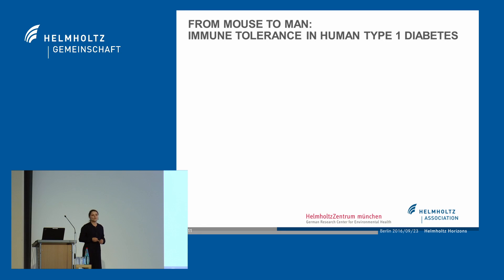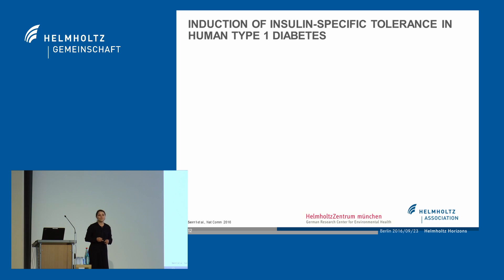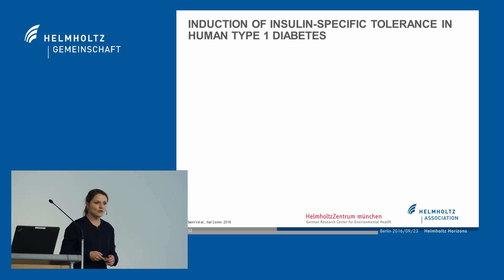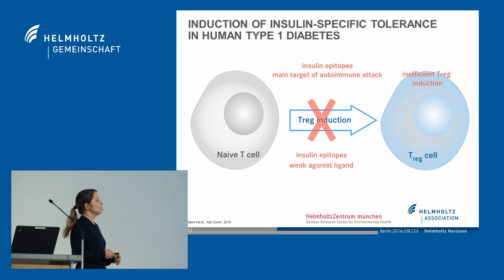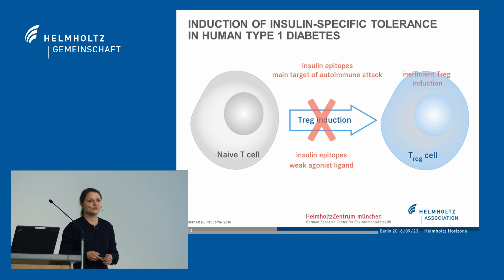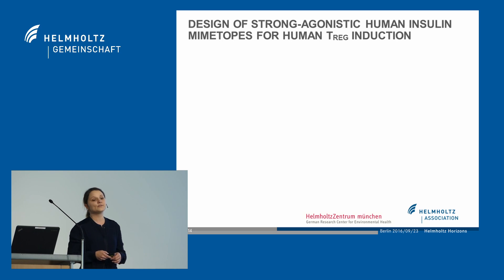However, our understanding of how to induce these human regulatory T cells is still in its infancy. The fact that in human type 1 diabetes, these critical insulin epitopes are likewise not strong but weak agonistic ligands, which results in impaired T-rex induction, supported our interest to study the translatability of these insulin mimetopes in human type 1 diabetes.